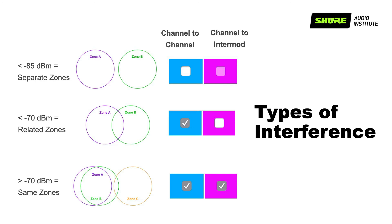And if the signal peak is greater than negative 70 dBm, the performance areas are effectively in the same environment. You can either calculate them as a single RF zone or, depending on how many performance areas you may have, you can keep them as separate RF zones and continue to respect channel-to-channel and channel-to-intermodulation spacing.